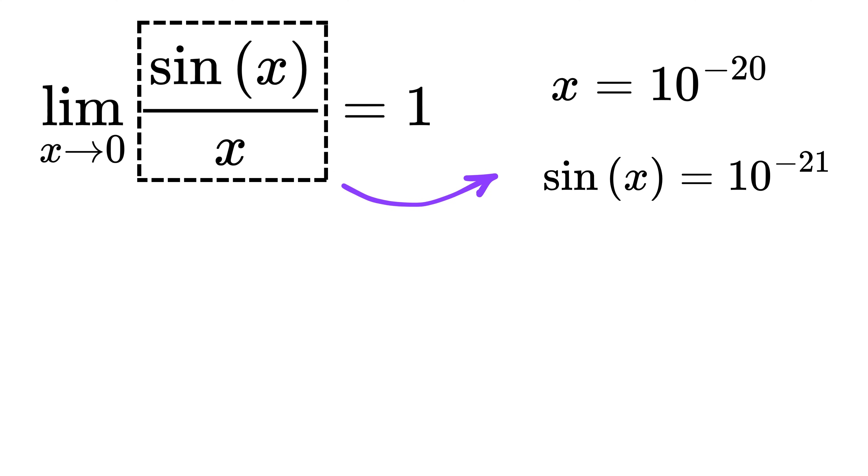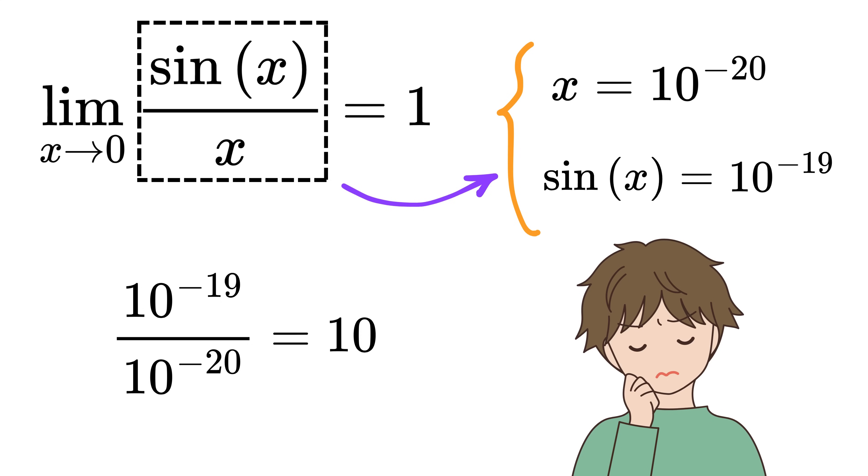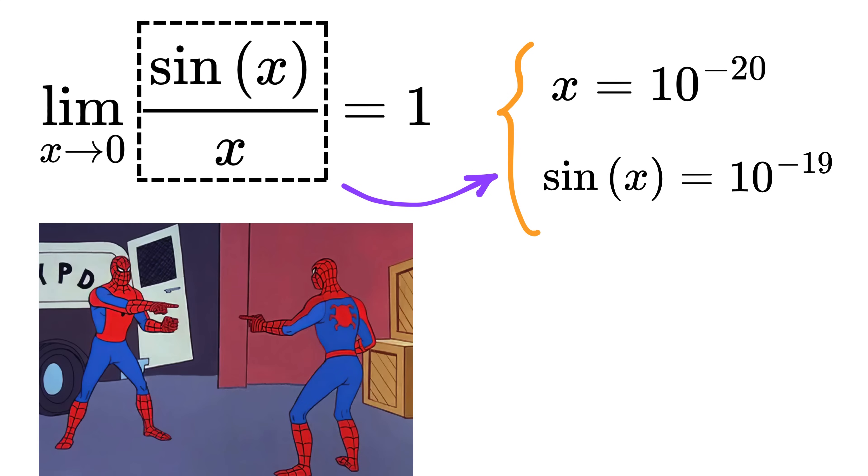If sin(x) was exactly 10 raised to minus 20, the same as x, the ratio becomes 1. If sin(x) was 10 raised to minus 19, then the ratio becomes 10—way off again. So clearly it's not just about them both being small. It's about how close they are to each other.